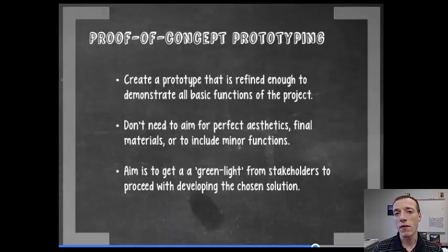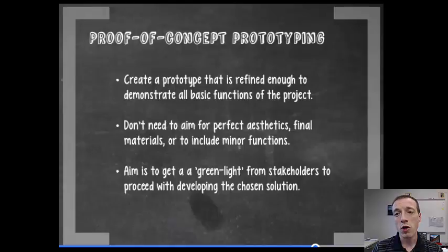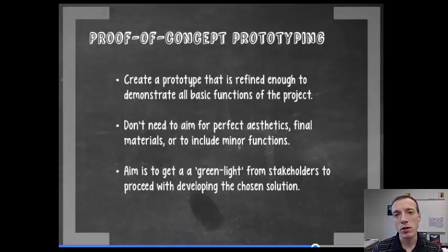If you don't get that green light, or if you feel like there are major shortcomings when you show them this prototype, that's when you want to iterate and go back to the brainstorming phase — think about what things you need to change and go forward again. You may even realize after building your proof of concept prototype that the concept is not feasible, and have to go way back to your user need phase if you really missed the mark. But this is the opportunity to know that without spending all the time it would take to build a really nice final prototype.